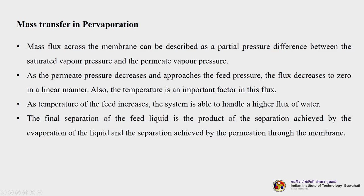The mass flux across the membrane can be described as a partial pressure difference between the saturated vapor pressure and the permeate vapor pressure. As the permeate pressure decreases and approaches the feed pressure, the flux increases to zero in a linear manner. Temperature is also an important factor: as feed temperature increases, the system is able to handle a higher flux of water. The final separation is the product of separation achieved by evaporation of the liquid and the separation achieved by permeation through the membrane.